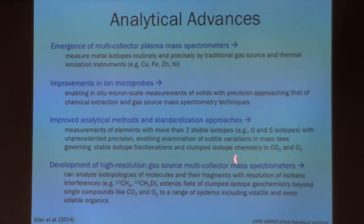There's another frontier that I'll just mention, but that you guys are just aware of. It's the development of this high resolution gas source multi-collector mass spectrometers. And this is measuring isotopologues of molecules and their fragments with resolution of the isobaric interferences that basically we just talked about, which extends the field of clumped isotope geochemistry beyond single compounds like CO2 and O2 to a range of systems, including volatile and semi-volatile organics.